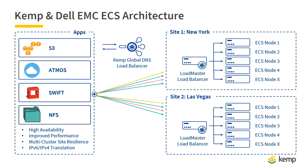When these applications make a request to push or pull objects from the ECS environment, they're going to first make a DNS request of where to go. That DNS request will go to the global DNS load balancer, which is now authoritative for that specific FQDN, such as ecs.kemptdemo.com. Because kemptdemo.com will delegate ecs.kemptdemo.com to the load balancer as an NS record, a name server record.